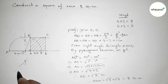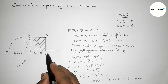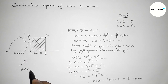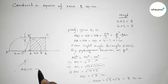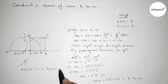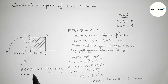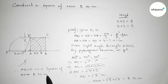Therefore ABCD is a square of area 8 square centimeter. By this way you can construct a square of area 8 square centimeter. That's all — thanks for watching. Please share it.